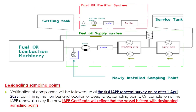After you have made the sampling point, you have to get it approved from the IAPP survey. Basically after 1st April 2023, whenever you are doing your first renewal IAPP survey, at that time you have to get it approved by the IAPP survey. So basically in the IAPP survey, they approve the pipeline diagram. After approving the pipeline diagram, you have to make the point, and when making the point you will take the following things in mind.